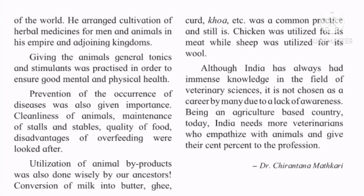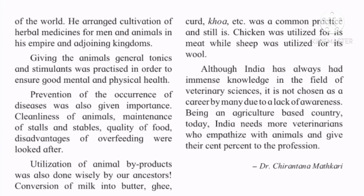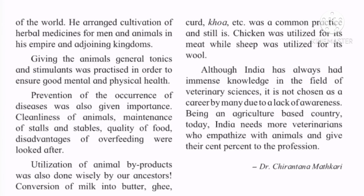Emperor Ashoka took initiative to build a veterinary hospital — the only such hospital built in the old world at that time. He arranged cultivation of herbal medicines for men and animals working in his empire and surrounding kingdoms. Prevention of disease was also given importance: cleanliness of animals, maintenance of stalls and stables, quality of food, and the disadvantage of overfeeding were all looked after. Utilization of animal by-products was also done wisely — conversion of milk into butter, ghee, curd, khoya, etc. was common practice, as was using chicken for meat and sheep for wool.